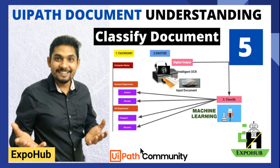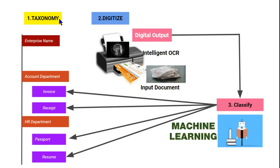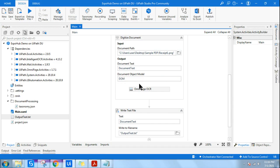Hello and welcome back to the xmoop channel. Today we will be looking at classified documents — this is the third step in our document understanding series. In the first step we have seen how taxonomy is created, which is a pre-processing step.